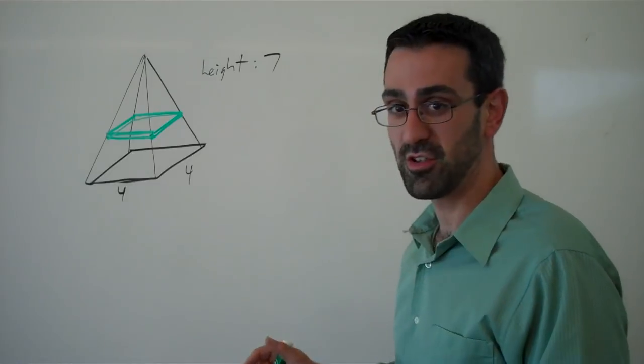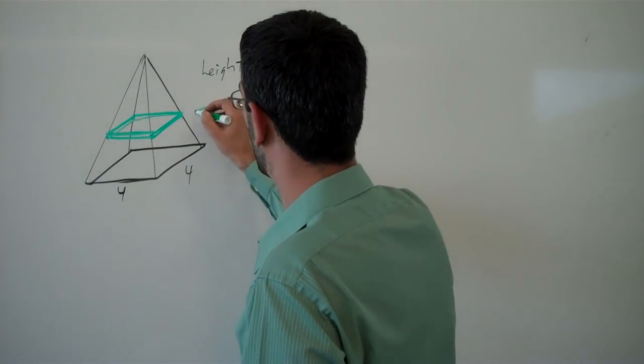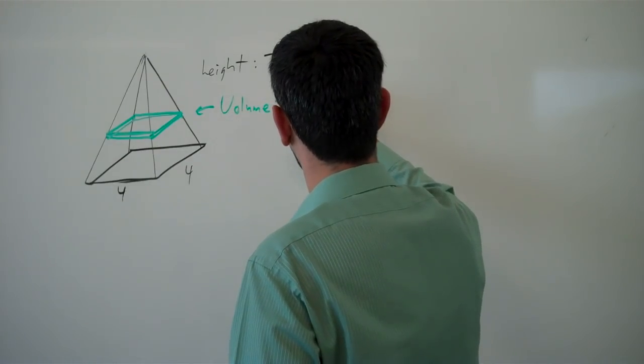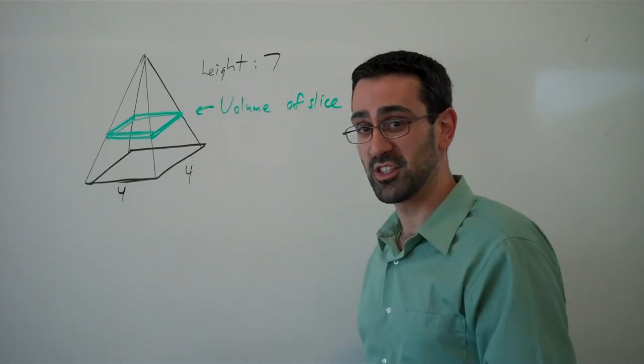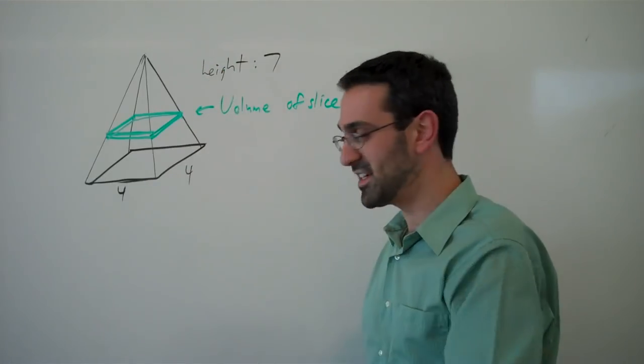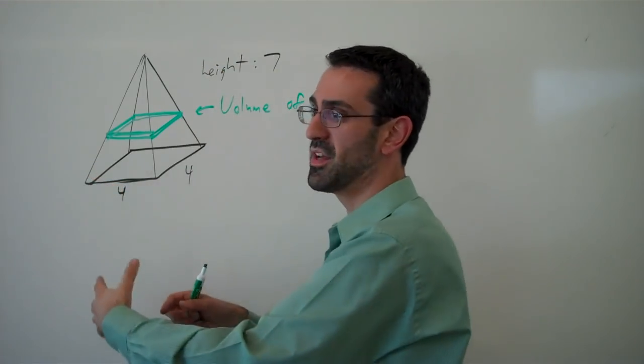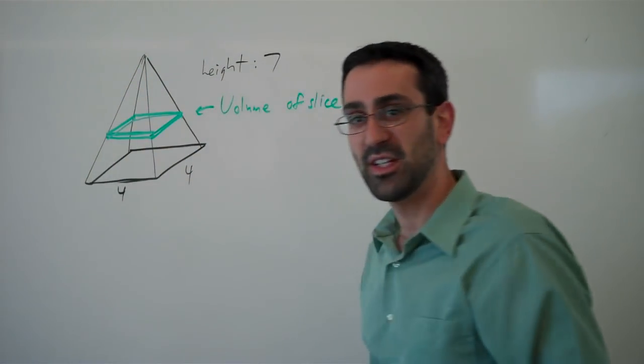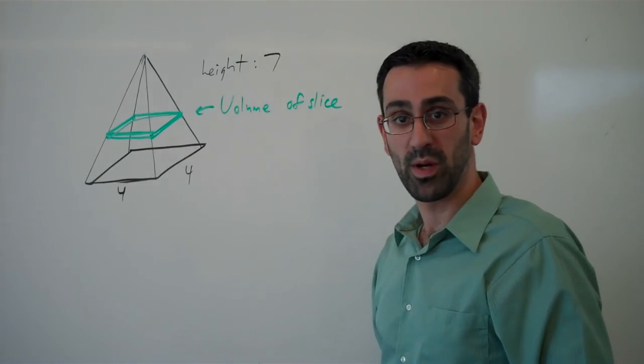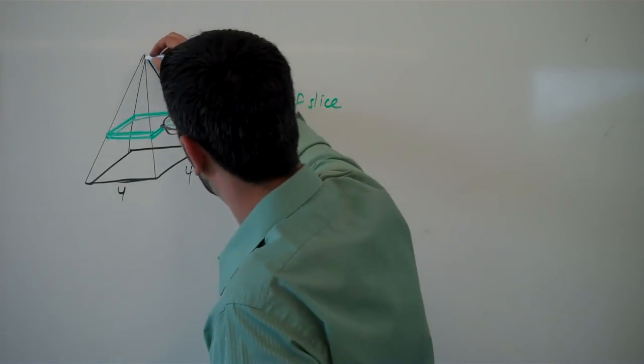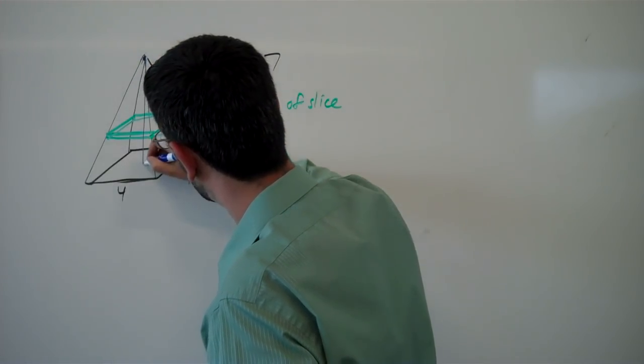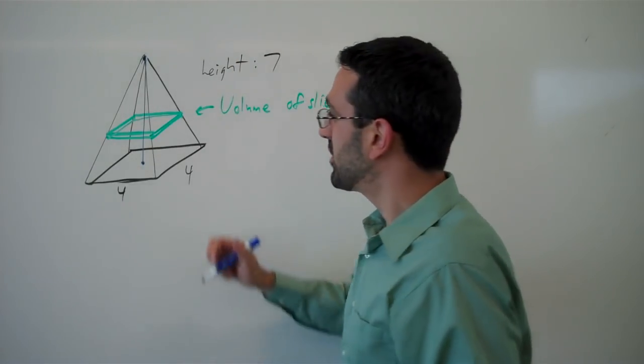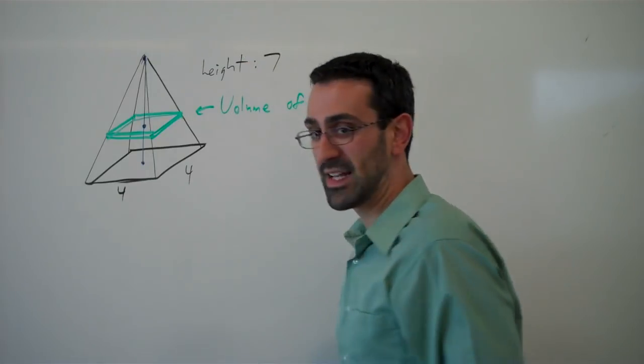So we need to find the volume of this slice. And the volume of course is going to depend upon where we are slicing because down here at the bottom the volume will be larger, whereas at the top the volume will be smaller. And so we need to introduce a variable representing where we are slicing. So drawing a perpendicular down from the top to the center of the base, we're going to introduce a variable to represent the location of that slice.